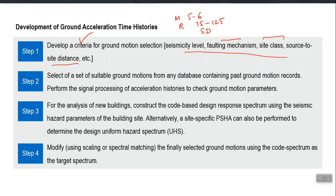Two earthquakes having the same PGA may result in completely different responses for the same structure because their frequency content may be different. Frequency content is influenced by how far your site is located from the source, the site class between your site and the seismic source, and most importantly the faulting mechanism — the actual physical phenomenon that produced the earthquake. These are the things you should consider carefully in Step 1.